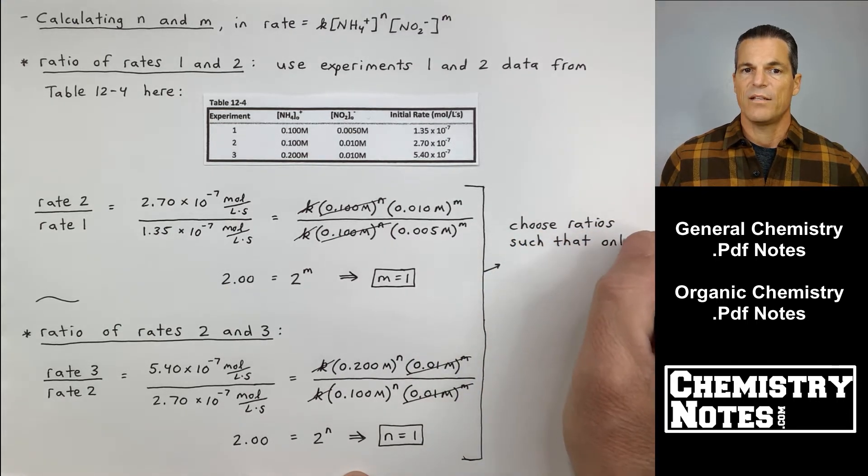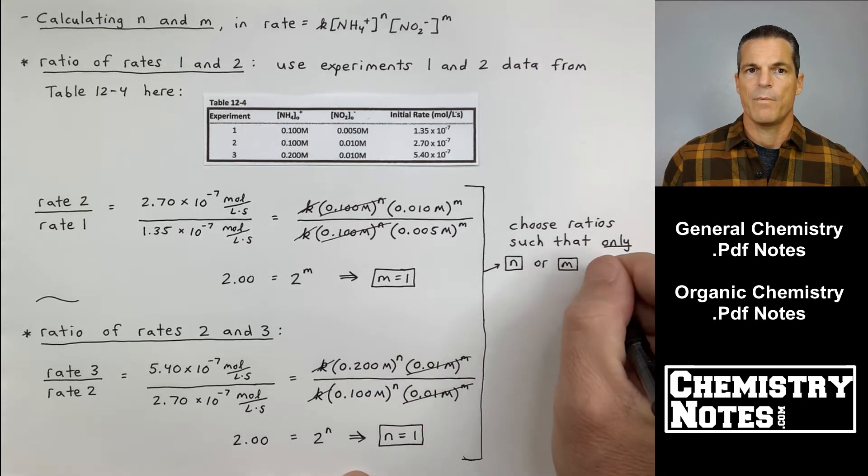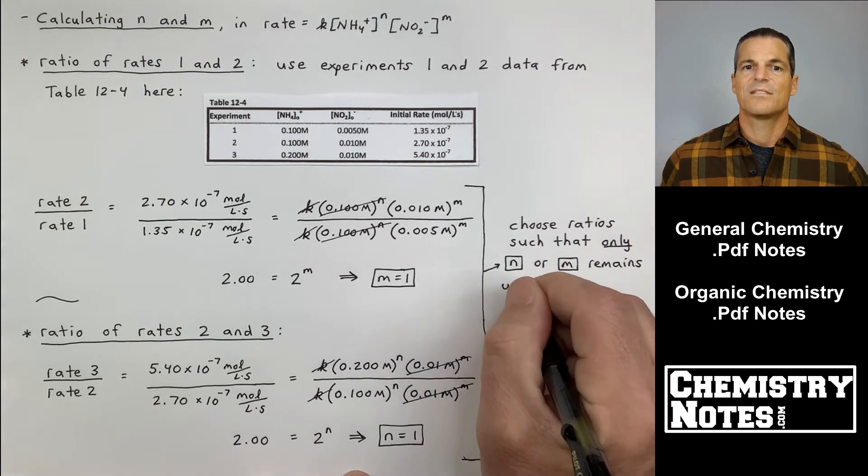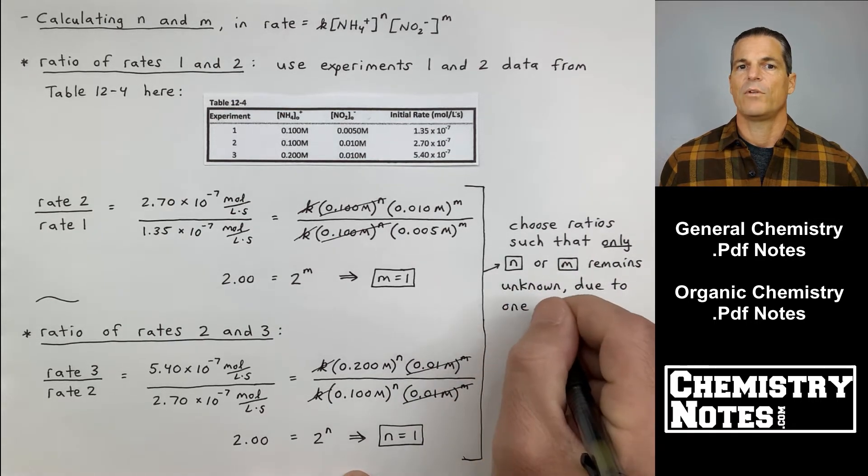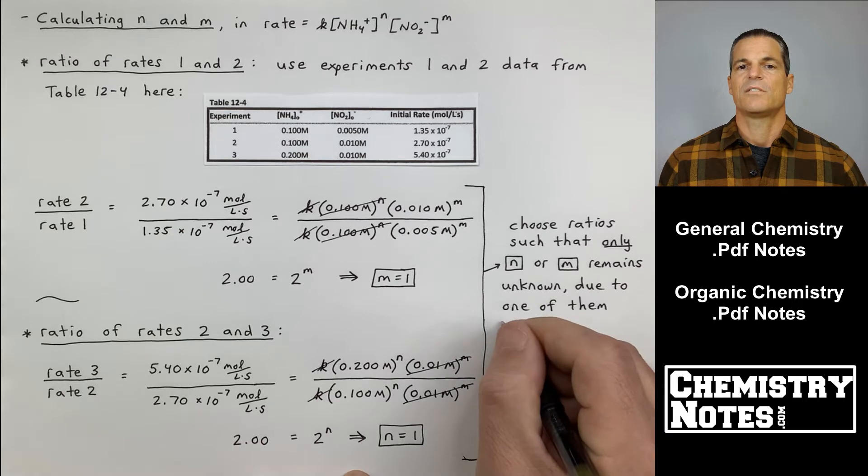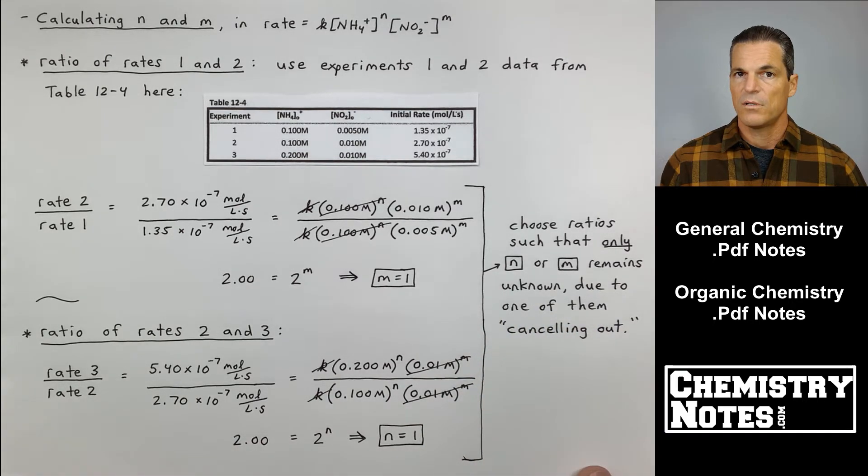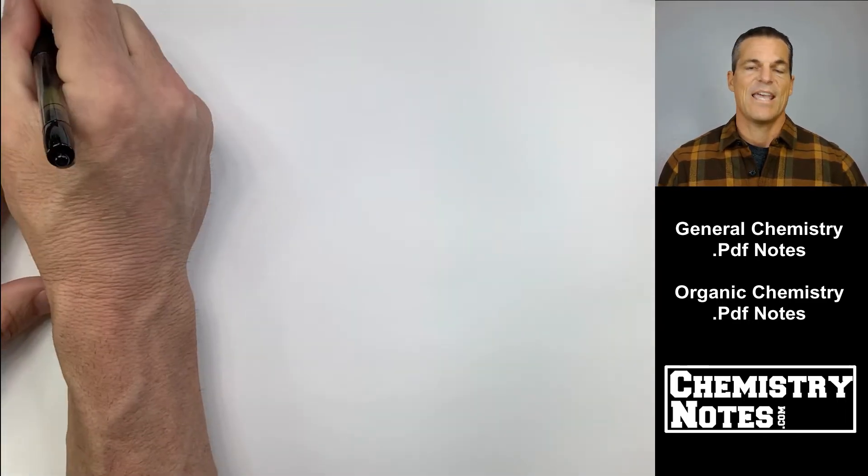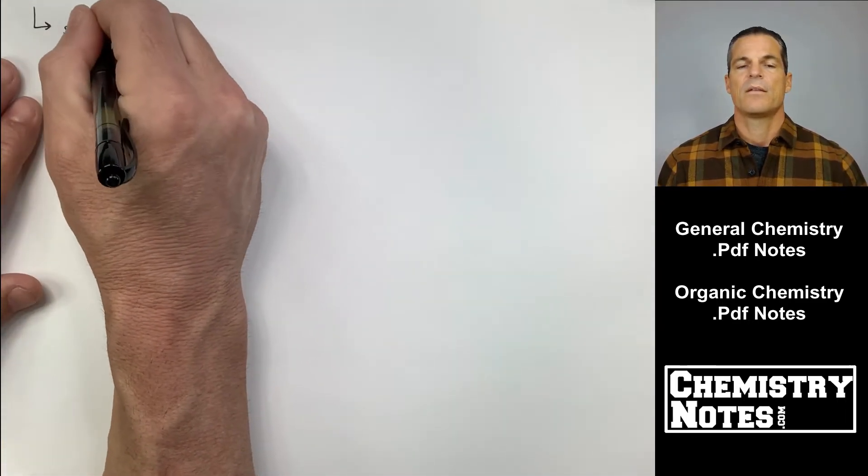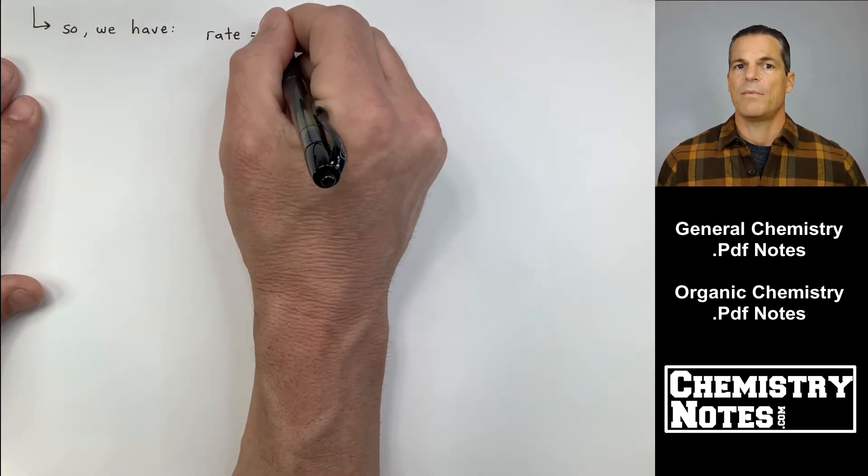What does that tell me? Well, my M equals 1 and my N equals 1. What I've done here to solve for these is I've chosen the appropriate experiments in table 12.4 such that I can cancel certain terms so I have only one variable to solve for. Choose ratios such that only N or M remains unknown due to one of the M or Ns canceling out. I've done that. I found M, I found N.